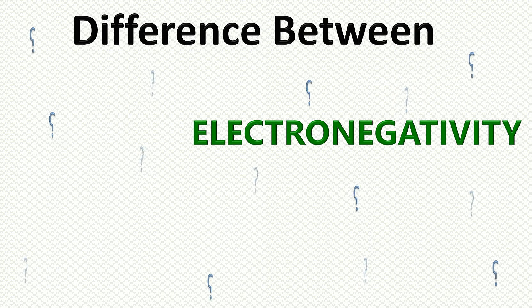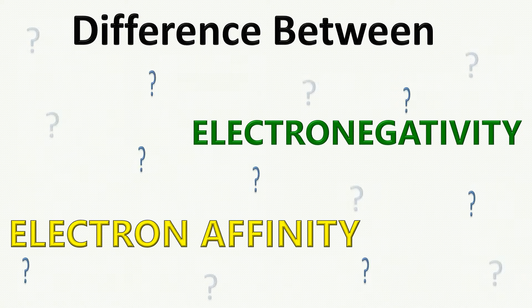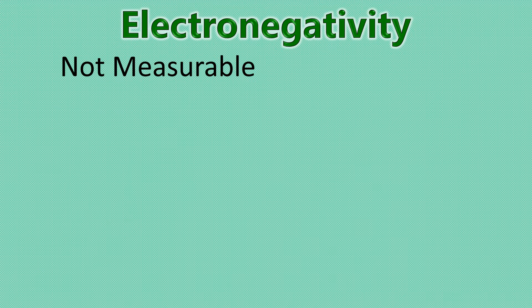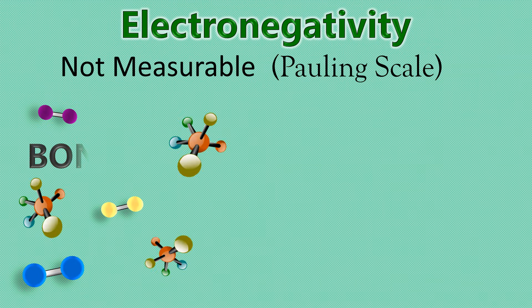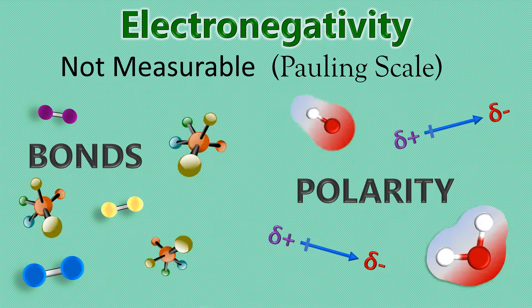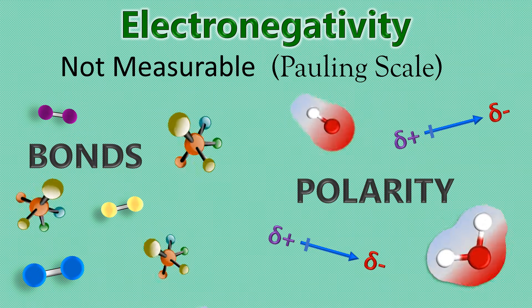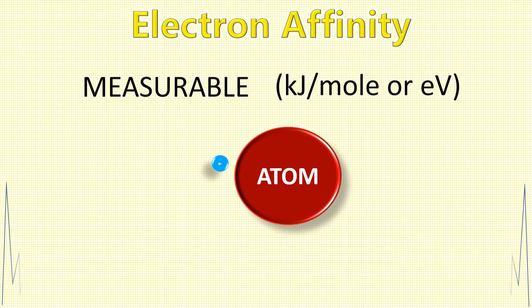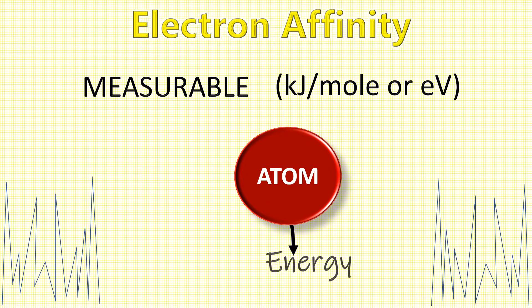So what's the difference between electronegativity and electron affinity? Electronegativity is more of a property and it's not something you can actually measure — it's explained through bonding and polarity. While electron affinity can actually be measured by finding out how much energy is released when an electron is added to an atom.